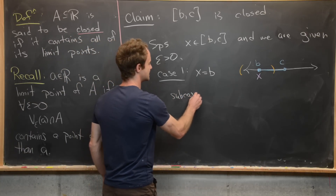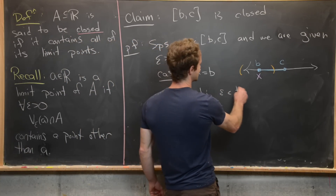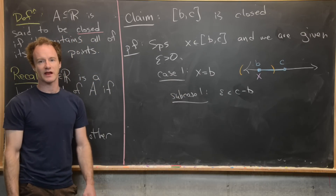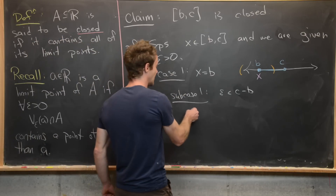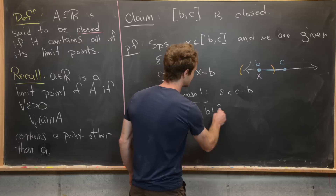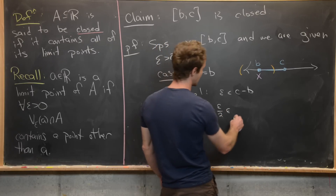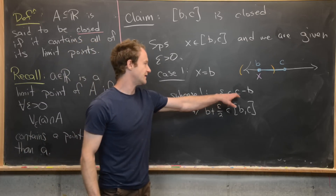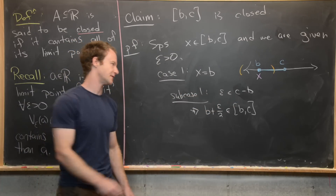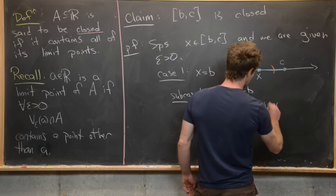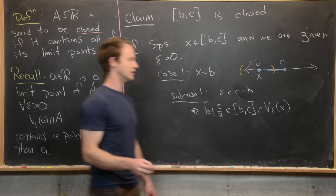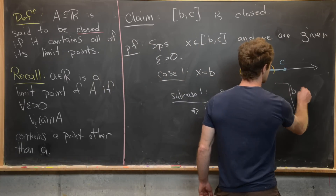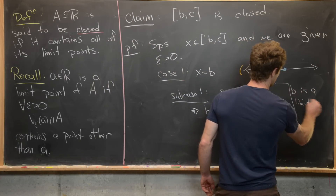Sub-case one: epsilon is less than C minus B, meaning epsilon is less than the length of the interval. In that case, B plus epsilon over two will be in the closed interval because we have not yet reached C, and it is also inside the epsilon neighborhood, which is exactly what we need. So B is a limit point.